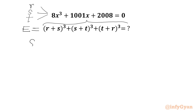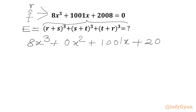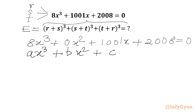Let us get started by writing our cubic equation: 8x³ + 0·x² + 1001x + 2008 = 0. The x² term is missing, so the coefficient is 0. We compare this with the standard form ax³ + bx² + cx + d = 0, whose roots are r, s, and t.